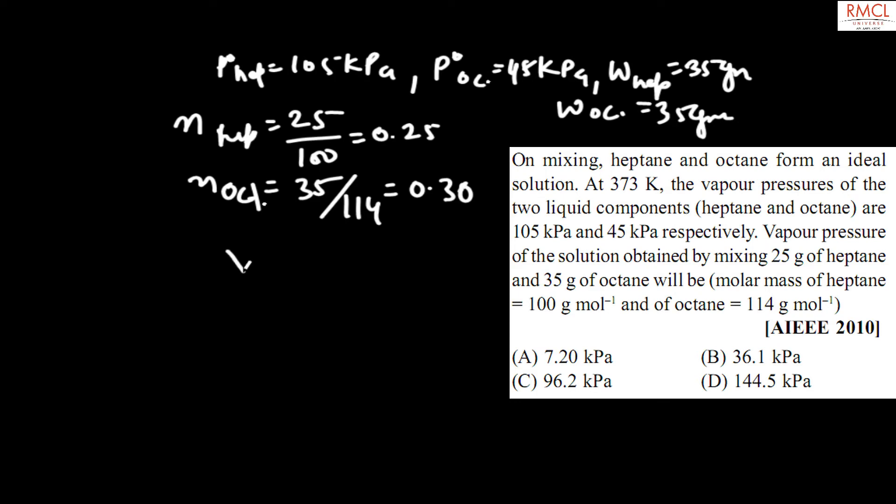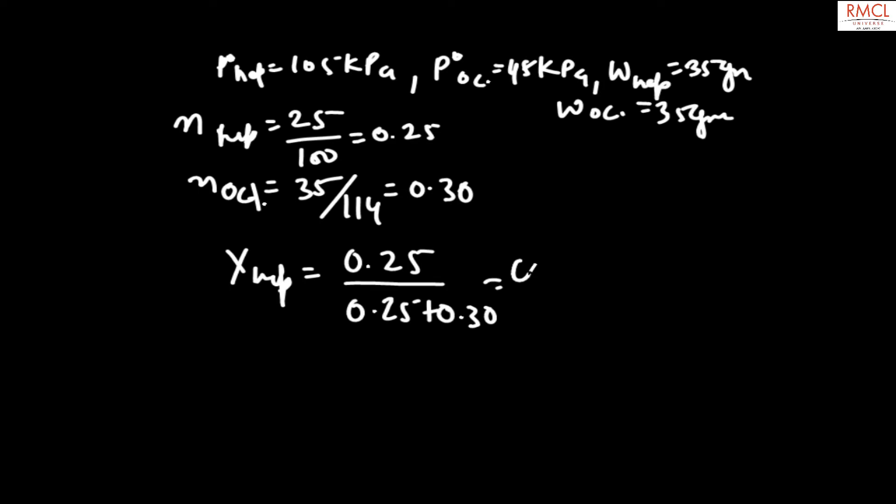X heptane is 0.25 divided by 0.25 plus 0.30. When we solve this, 0.25 divided by 0.55, we obtain approximately 0.45.